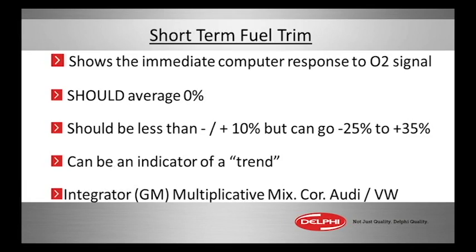It should be around 0% ideally, but we know engines don't run ideally. We're going to see fluctuations within 10% — adding fuel positive, or negative taking fuel away. If it's been sensed rich, it could go as high as 25 to 35%, either negative or positive, rich or lean. When we see those kind of numbers, you'll almost immediately get the MIL on for a rich or lean problem.